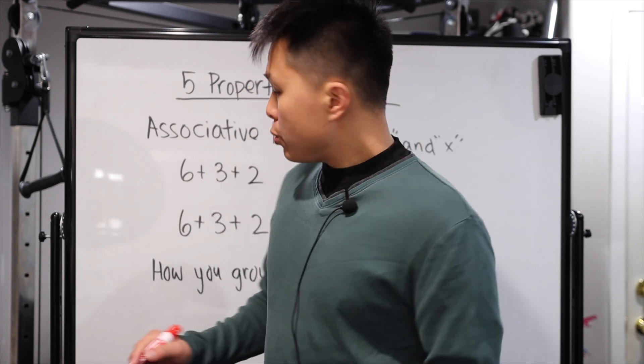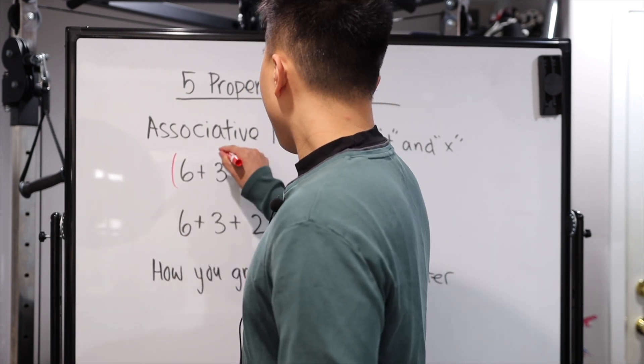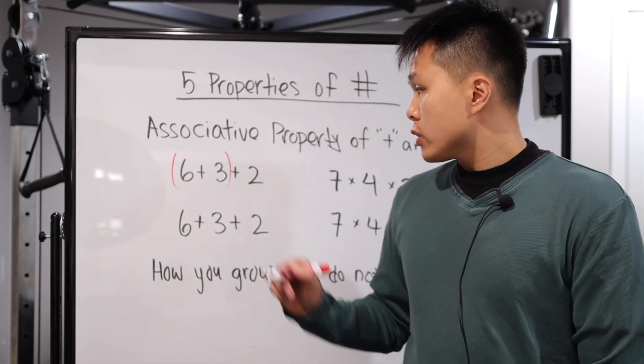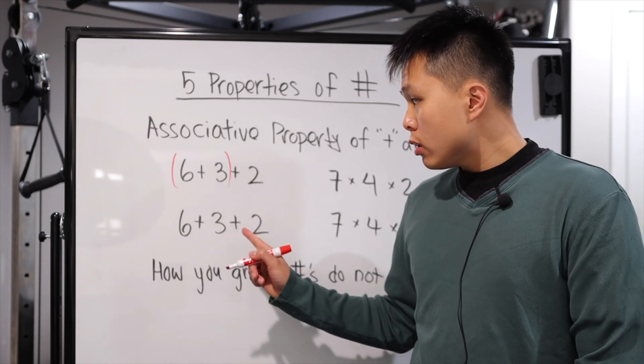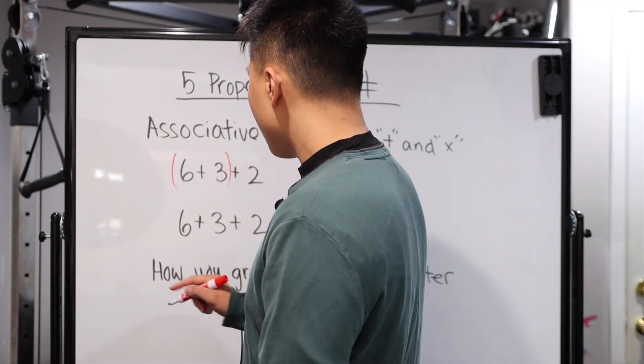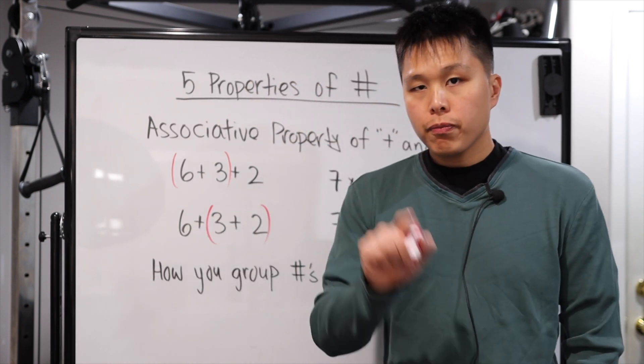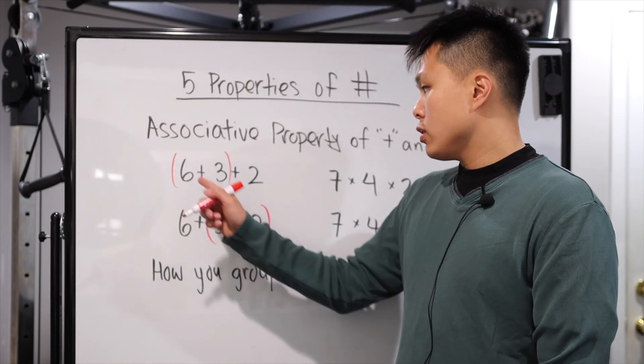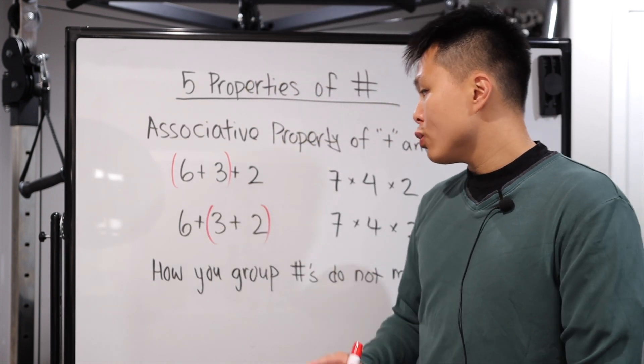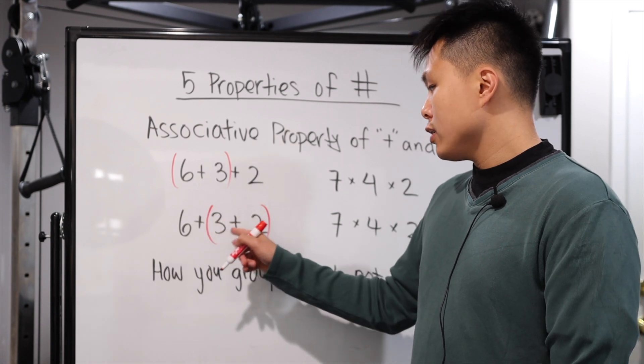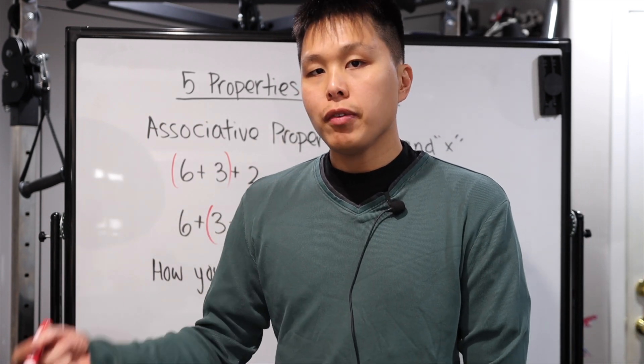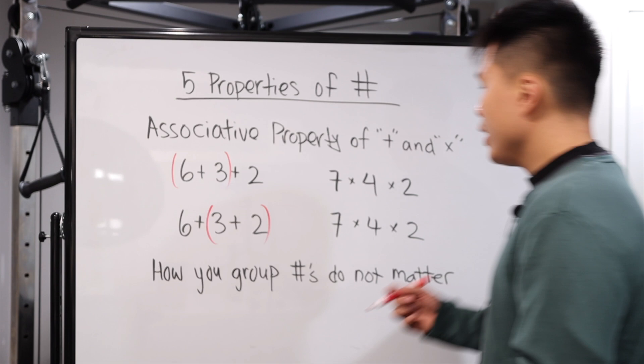If I choose to add six and three first, then add two, it will have the same answer as if I choose to add three and two first and then add six. So six plus three is nine plus two is 11. Six plus, and this one's three plus two is five, so six plus five is still 11.